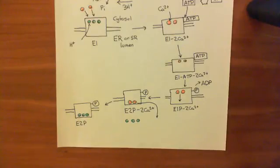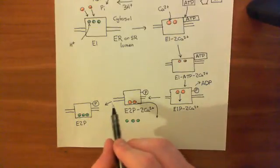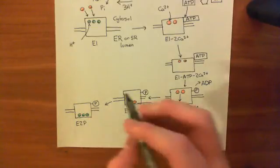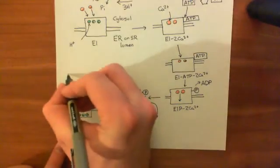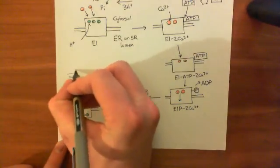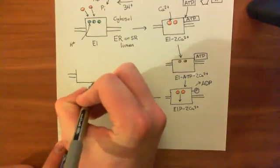Now what happens is that the phosphate group falls off. Once the protons bind, the phosphate group falls off, and you go temporarily into this conformation, this state.